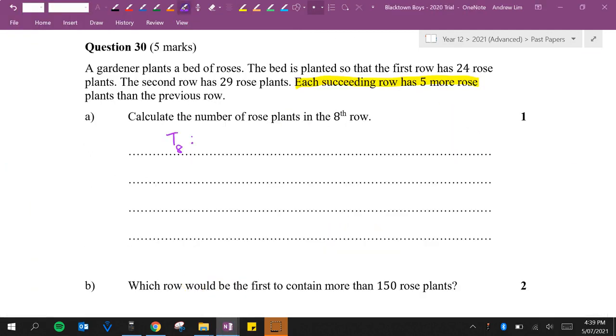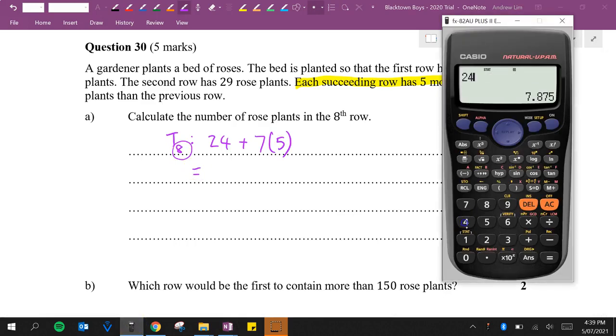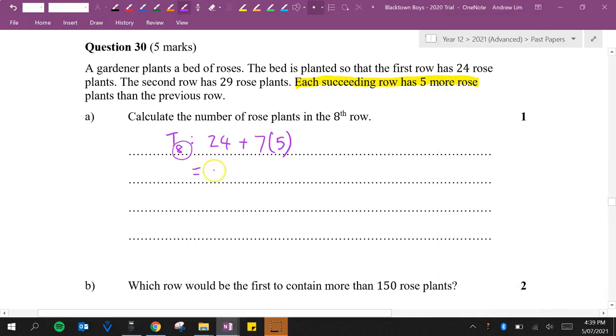So A is the first term which is 24 plus N minus 1 is 7 and the difference is 5. So 24 plus 35 is 59. There are 59 rose plants in the eighth row.